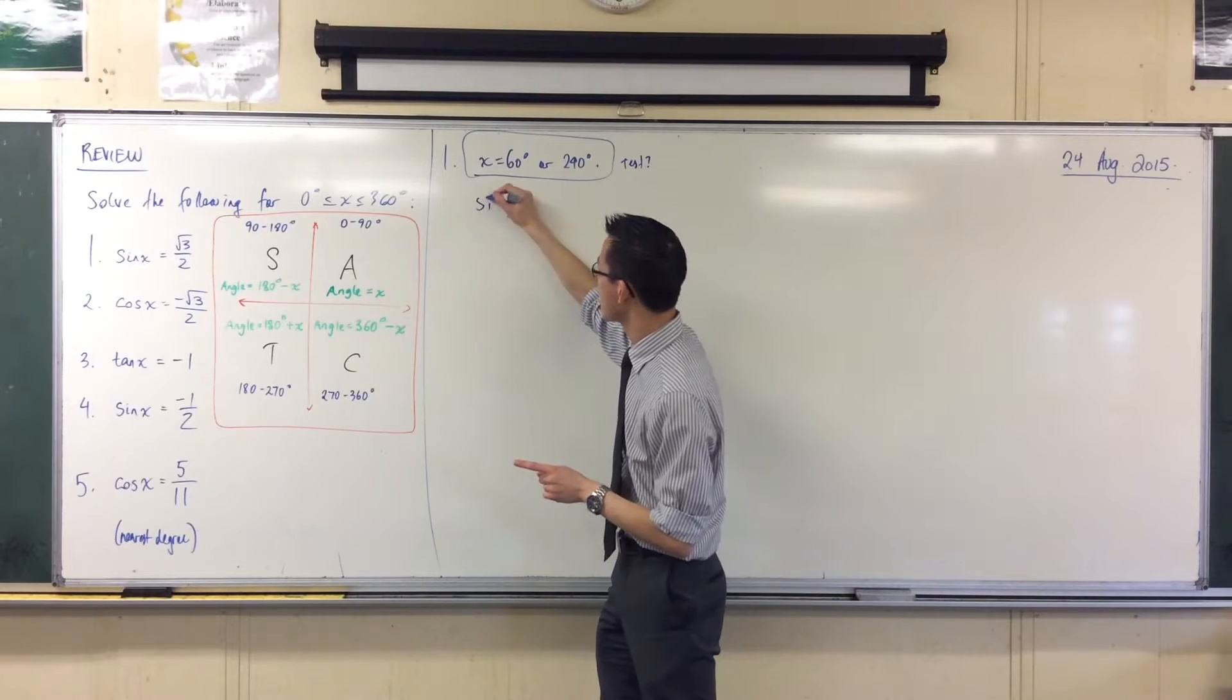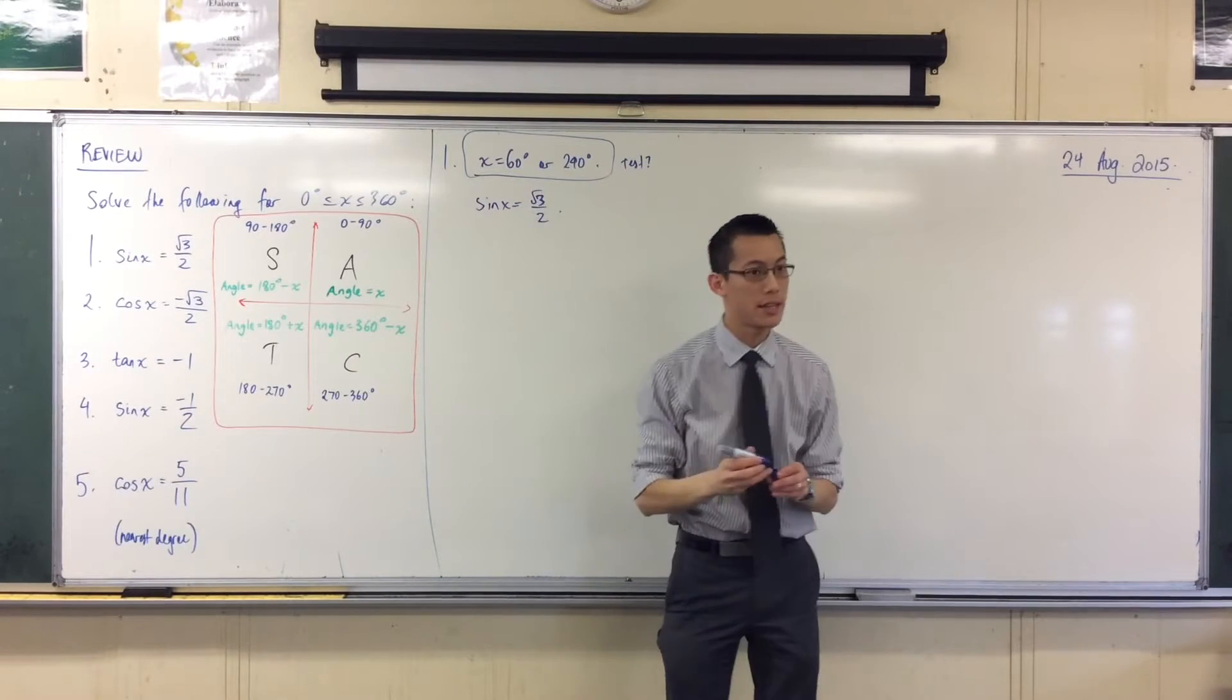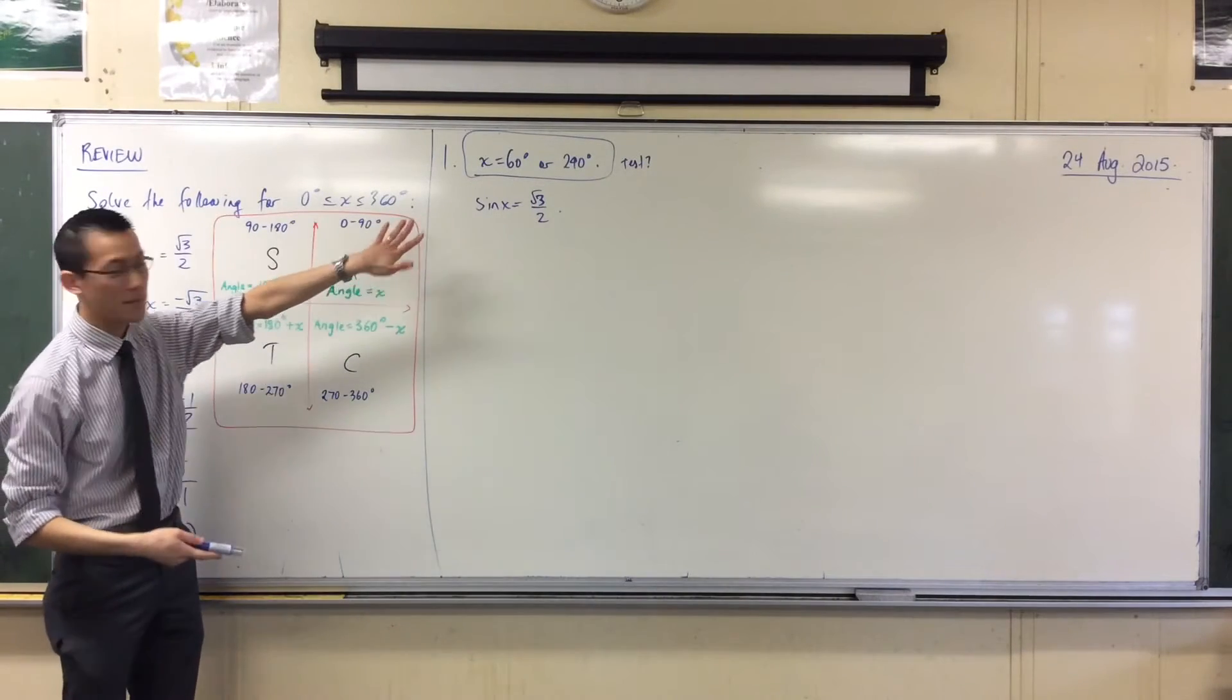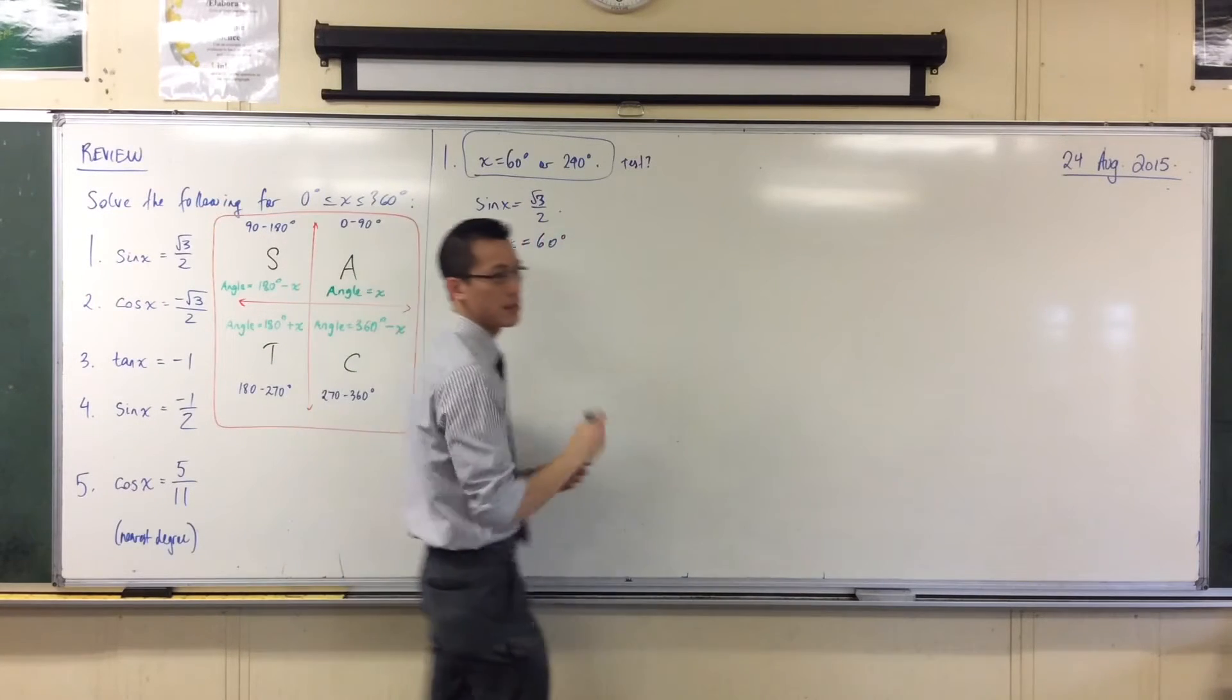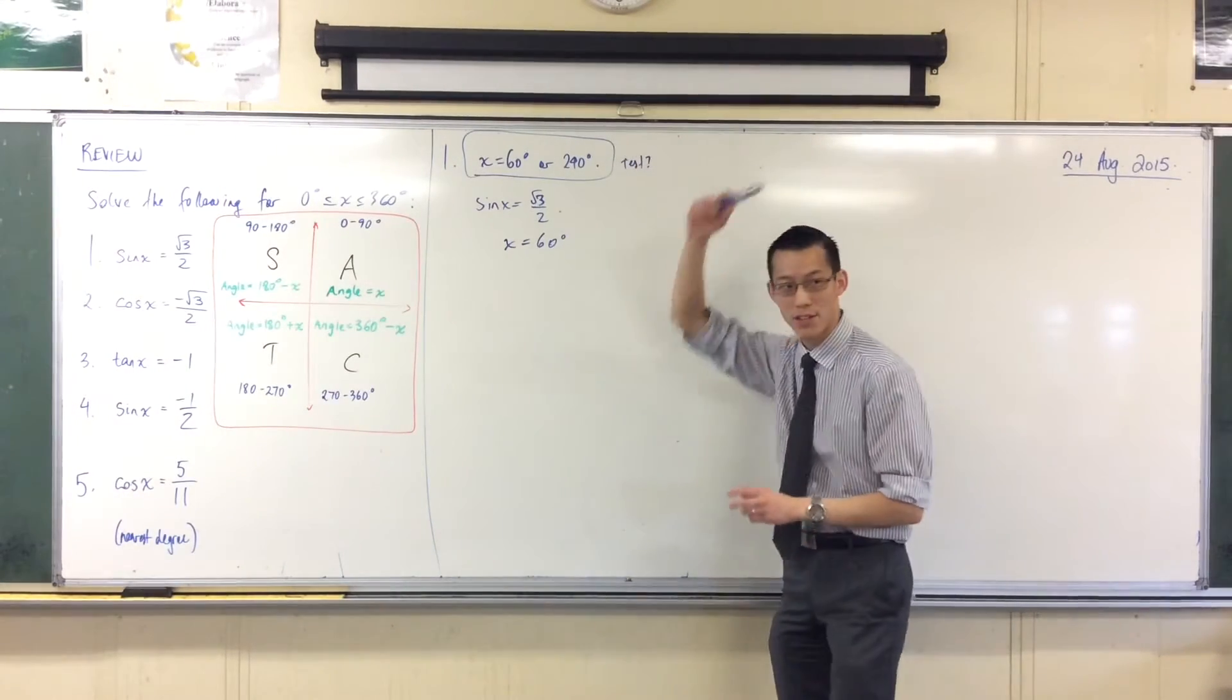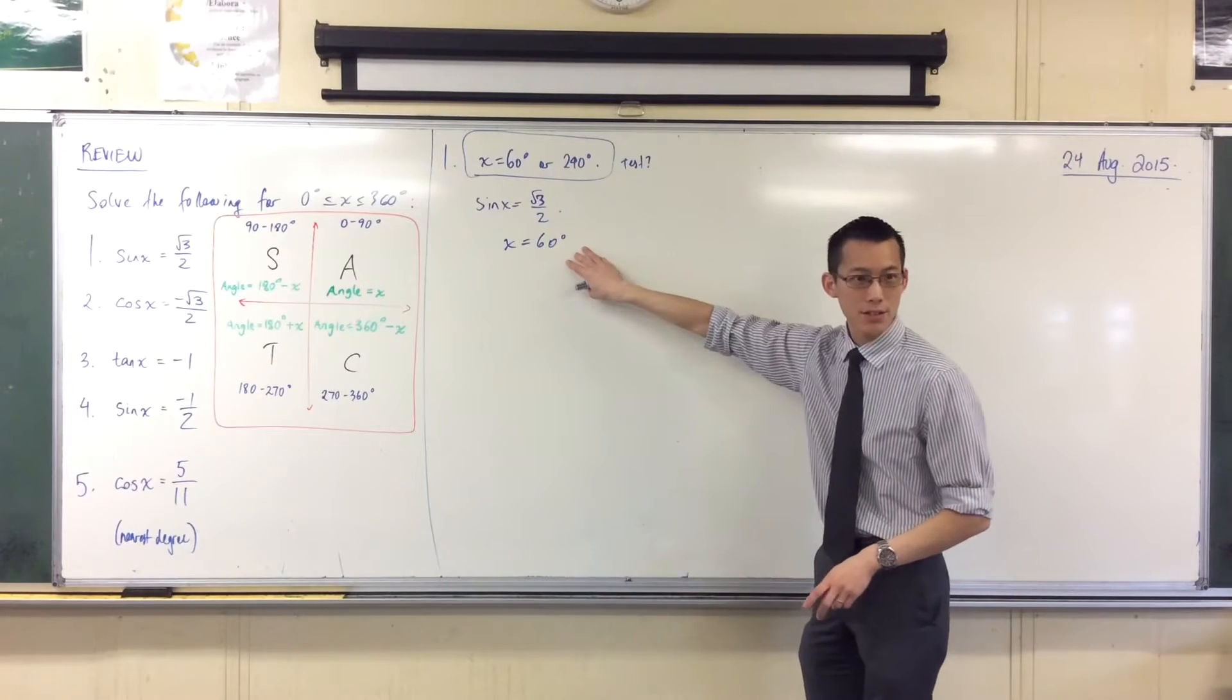So this is what we're going to test. If sin(x) equals √3 on 2, you can do one of two things at this point. You can hopefully start to recognize √3 on 2 as one of your exact values and say, aha, I know what the first solution will be. For sure, it's going to be 60 degrees. Alternatively, you can reach for your calculator and go sine inverse √3 on 2 and it will also hand you back 60 degrees. So there's our first solution.